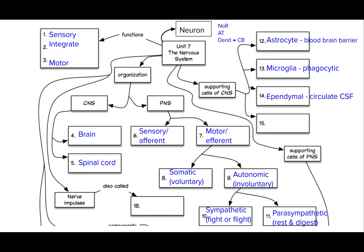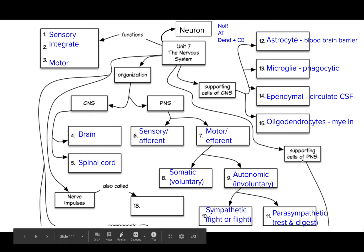The ependymal cells, they are responsible for circulating your cerebral spinal fluid. They don't make it. It's made by the choroid plexus in your diencephalon. But the ependymal cells help move it because they have cilia, little wave-like extensions. And then my favorite one, the oligodendrocytes. These are the ones that produce the myelin in our brain and spinal cord. Now our peripheral nervous system has others as well, which we'll get to on the next screen.